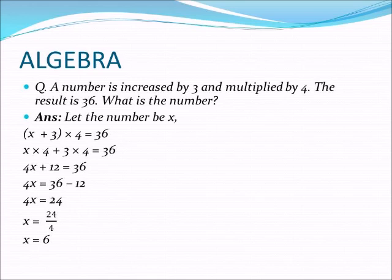A number x increased by 3 means x plus 3, and multiplied by 4 after increasing means (x plus 3) in bracket, into 4. Please don't forget to keep the bracket, because after increasing only it is multiplied by 4. So (x plus 3) into 4 is equal to 36. We have formed an algebraic equation from this question.